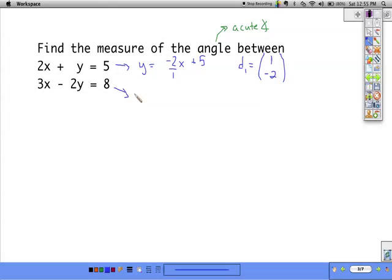The second line can be written as y equals 3 halves x minus 4. So, the direction of that line, its direction vector, can be given as 2, 3.